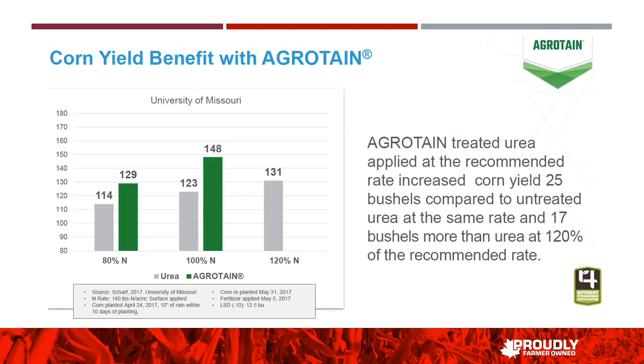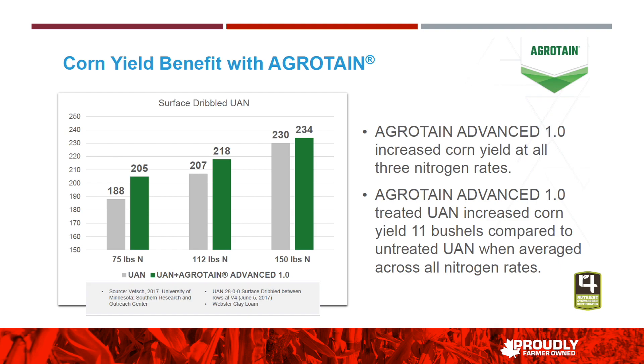When putting NBPT on urea, the most important thing to remember is that using more nitrogen only means more loss — it does not compensate for using a moderate rate of nitrogen that is protected. More N only means more loss. The protection is quite significant. Under UAN, you'll see gray bars versus green bars with treated, and the yield response is there. On average, it's about that 11 bushel response we've seen in the research.